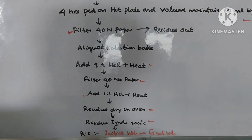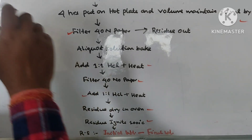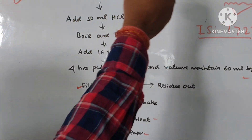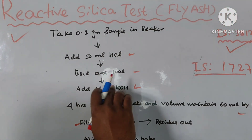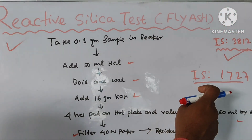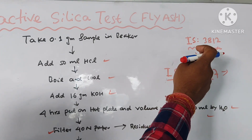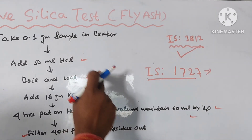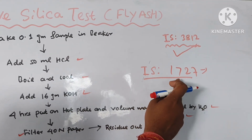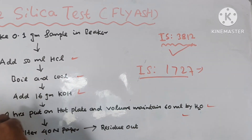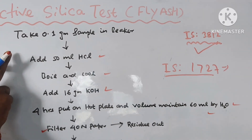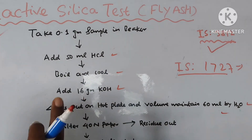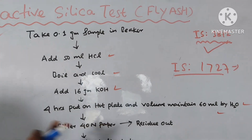Once again I am repeating: determination of fly ash as per standard IS 3812. The testing method standard is IS 1727 — it is the pozzolanic material testing method. So IS 1727 is the testing method standard.